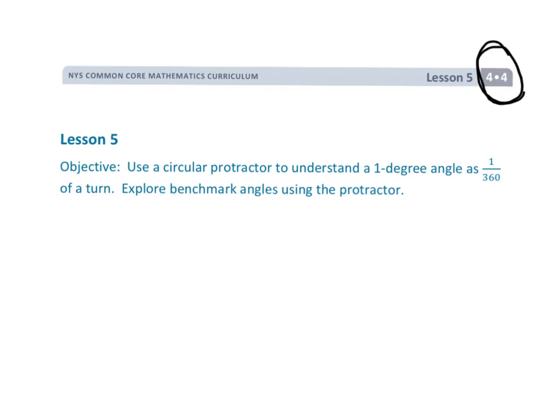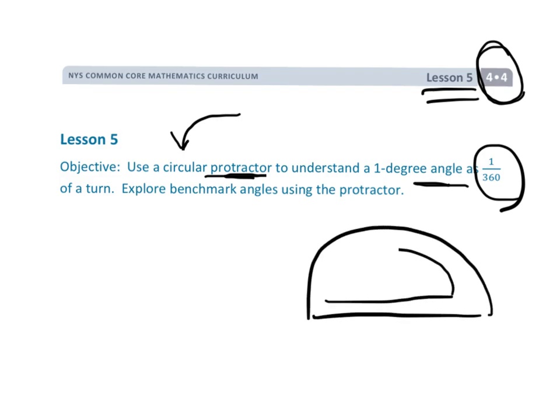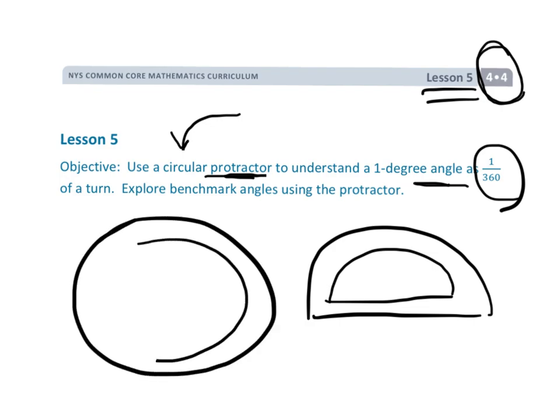This is fourth grade module four lesson five. In this lesson we're going to be using a protractor to understand that angles are measured with degrees and that each degree represents 1/360th of a turn. What's different about this lesson is that they're asking us to use a circular protractor instead of those traditional protractors that kind of look like the letter D. We're going to be using a circular protractor and I'm going to be comparing and contrasting the two. Ultimately we're going to be using the normal traditional protractor but I thought today I'll compare and contrast the two.